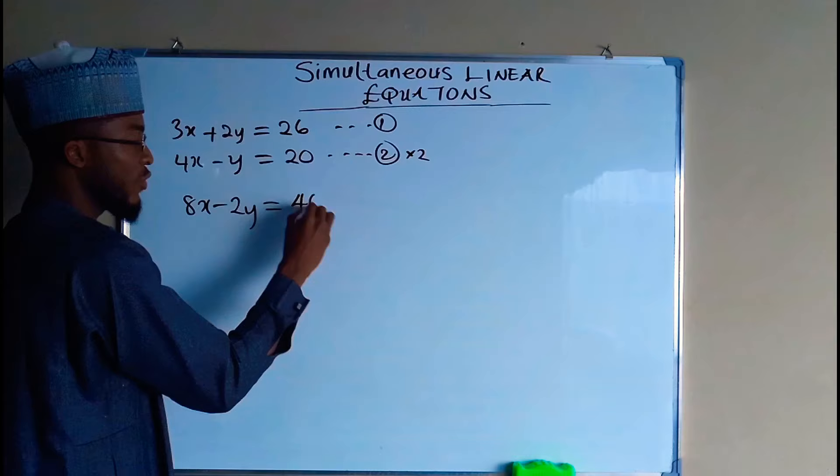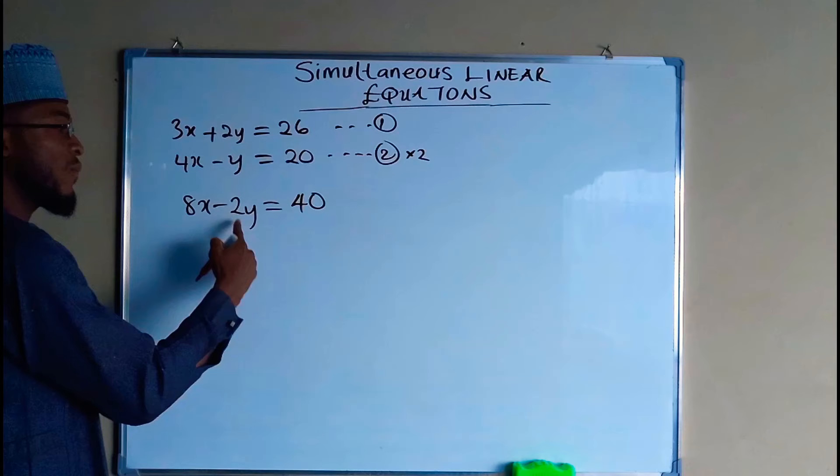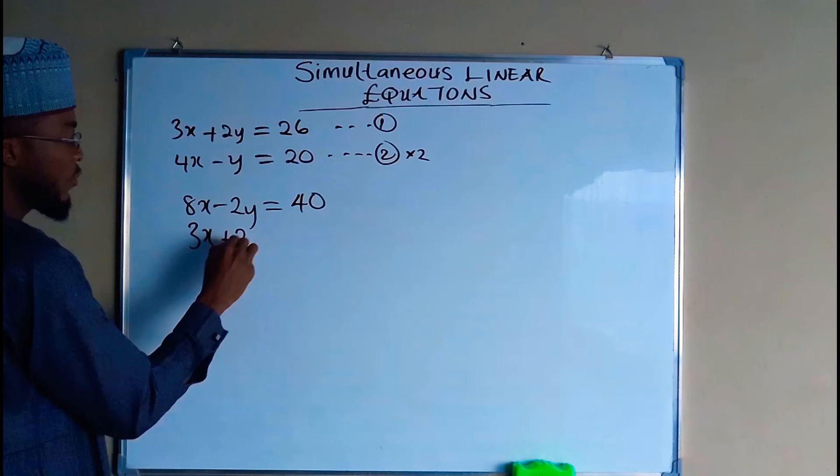Now we bring equation one back without changing any value there, because what we are after is to have the same coefficient of y. So here we have 3x plus 2y, this is equal to 26.